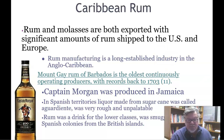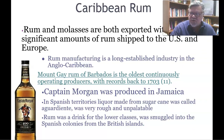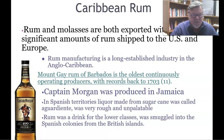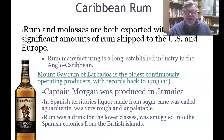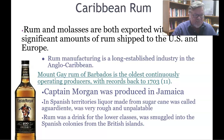Captain Morgan rum, produced in Jamaica, refers to the buccaneer Henry Morgan who lived in Jamaica. Liquor made from sugarcane was originally called aguardiente — very rough and unpalatable. Rum was a drink for the lower classes and was smuggled into Spanish colonies from British islands. Over time it became refined and is now a major export product.